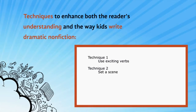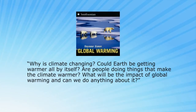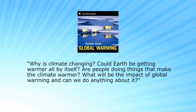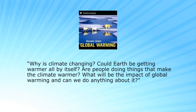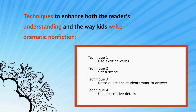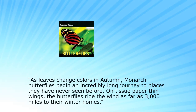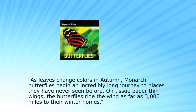I use all kinds of techniques. In another book available in print and digital called Global Warming, I ask questions that anticipate what the reader is thinking: 'Why is climate changing? Is Earth getting warmer all by itself? Are people doing things that make the climate warmer? What will be the impact of global warming? And can we do anything about it?' I also love to employ descriptive detail — these are really stories. In a book on butterflies, available in both print and digital, I've written: 'As leaves change color in autumn, monarch butterflies begin an incredibly long journey to places they have never seen before. On tissue-paper-thin wings, the butterflies ride the wind as far as 3,000 miles to their winter homes.'